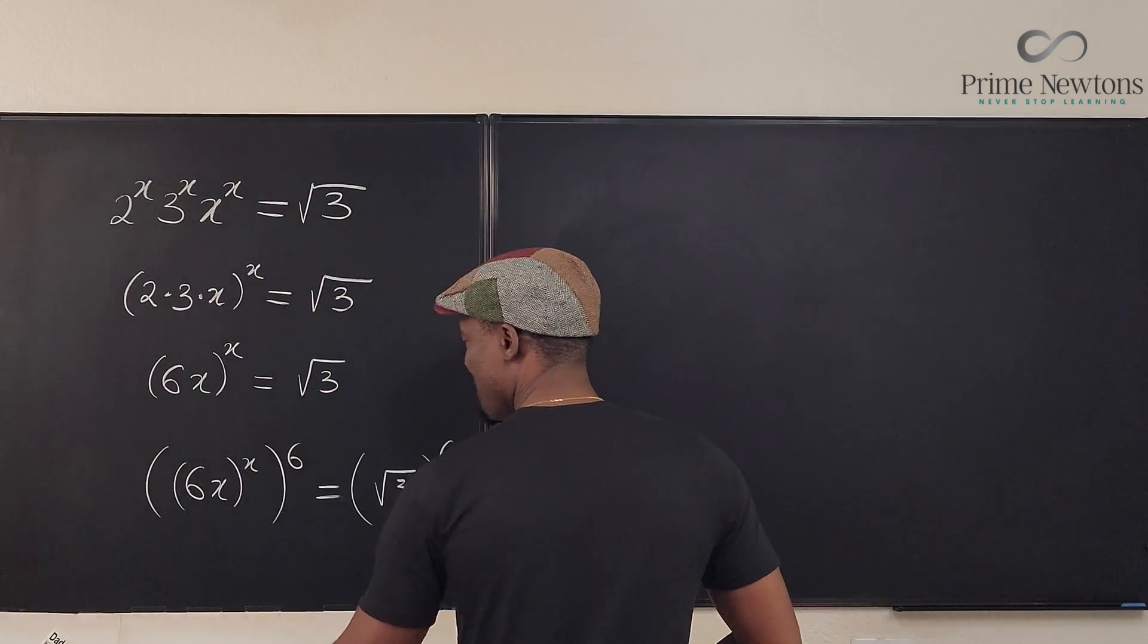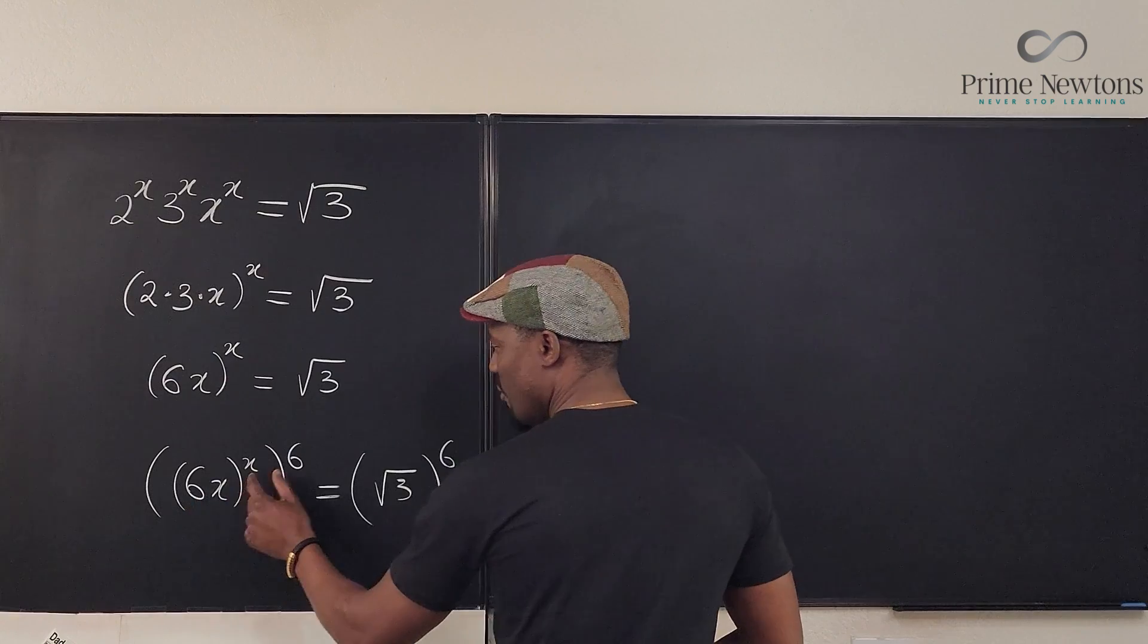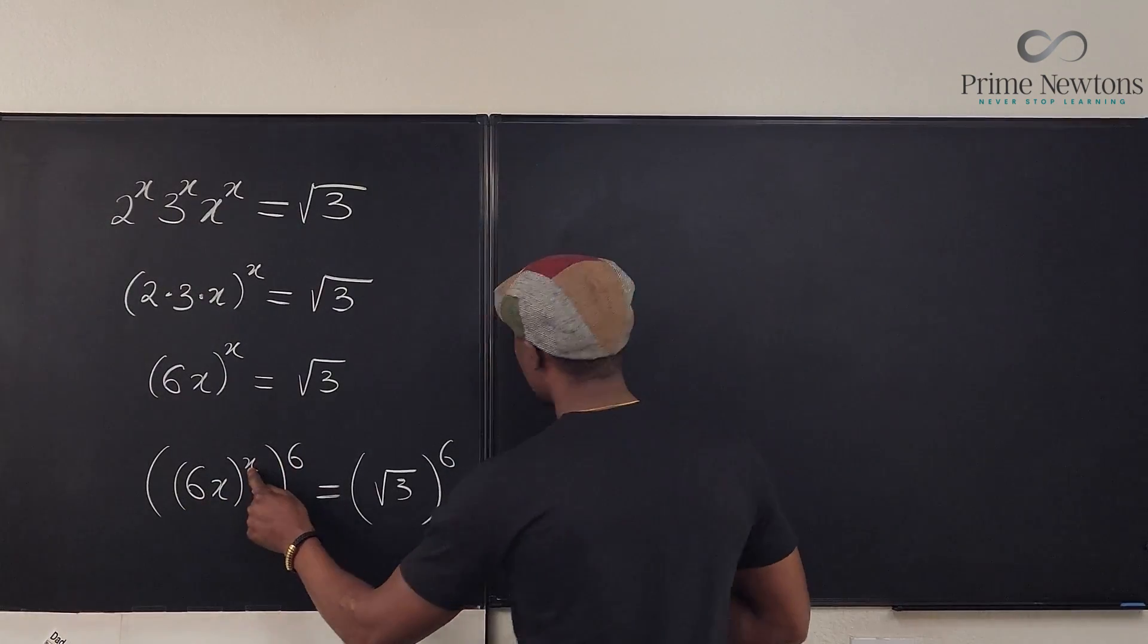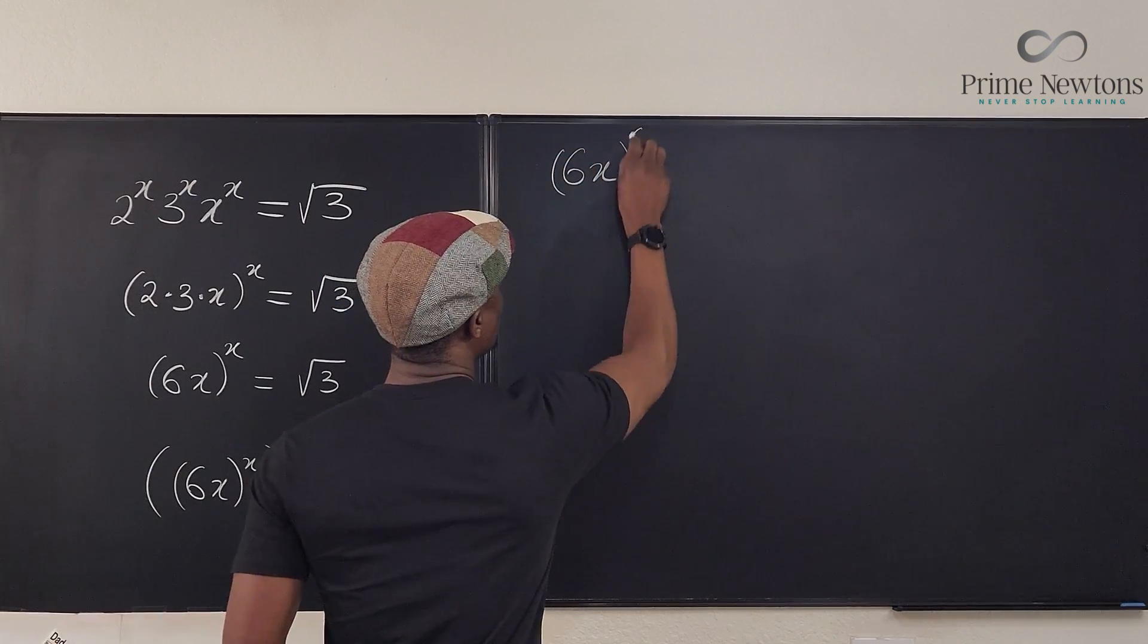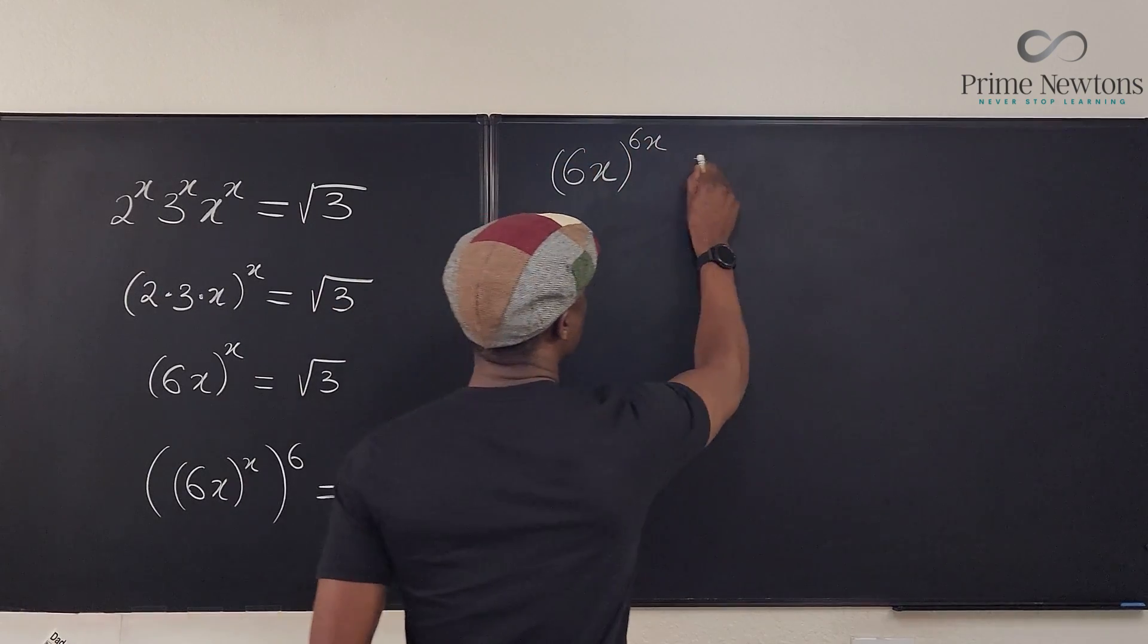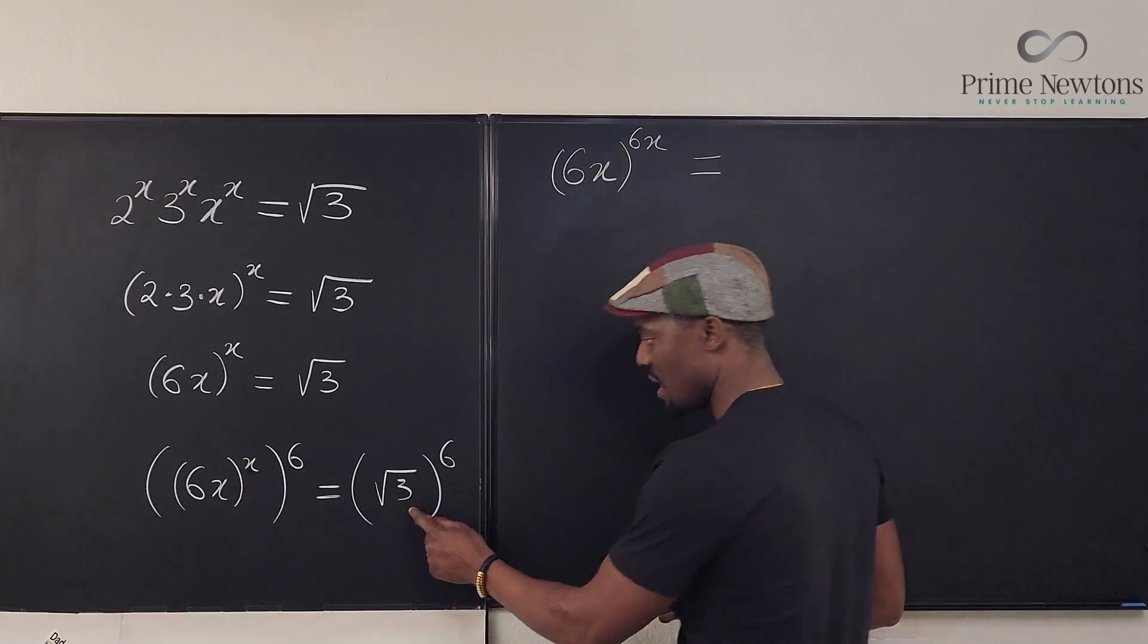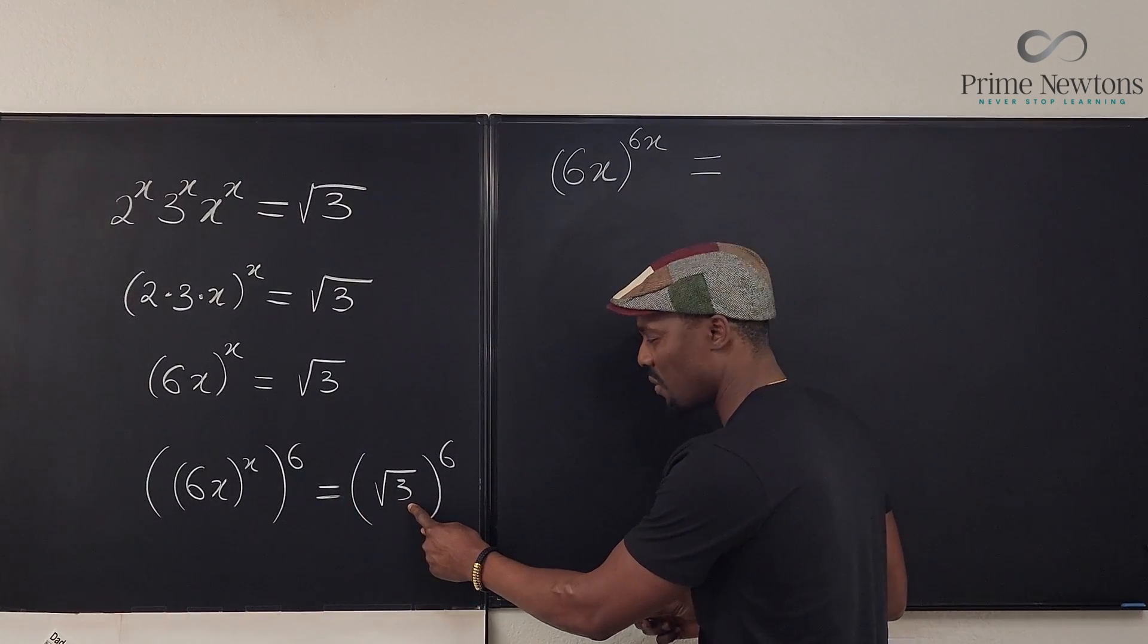And see what happens. Here we're going to have 6x. Remember, this is going to be 6 times x. So what we have is 6x raised to power 6x. And what you have on this side is going to be the 3 raised to power 6.